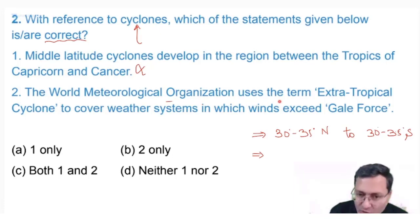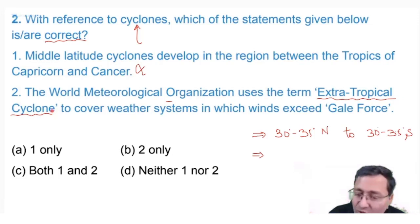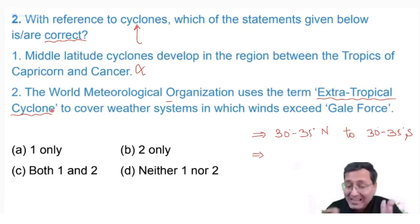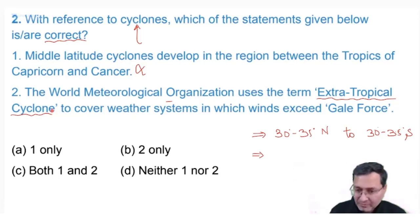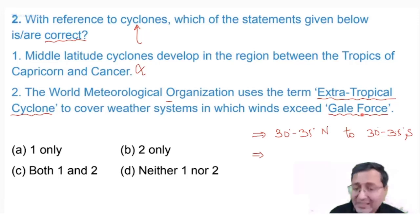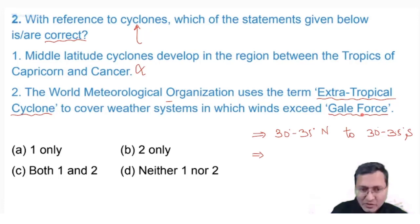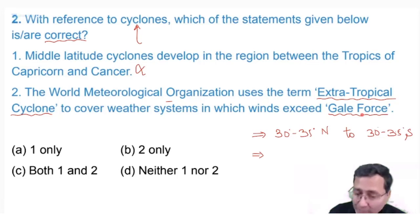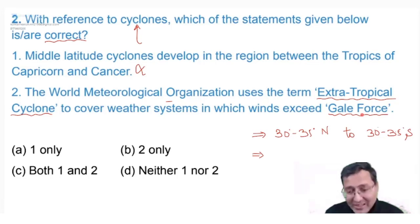The second statement says the World Meteorological Organization uses the term 'extra tropical cyclone.' Extra tropical cyclone is another name for temperate cyclone — the name itself says it all: extra tropical means beyond the tropics. The statement covers weather systems in which winds exceed gale force. Gale force refers to extremely violent, very strong winds.